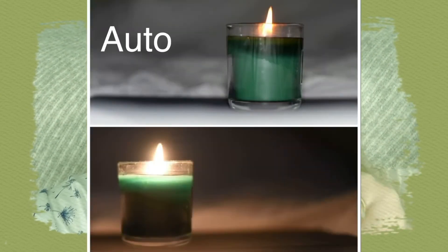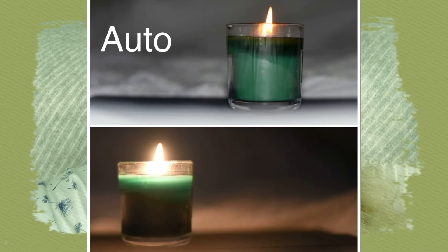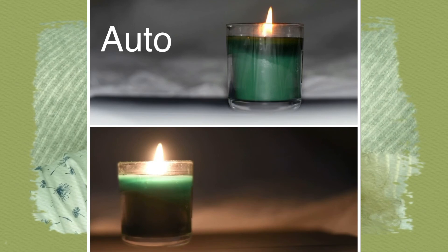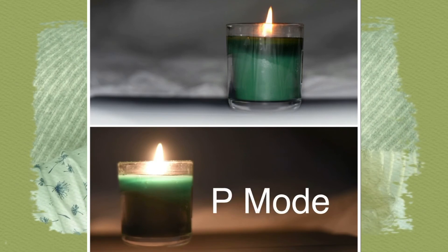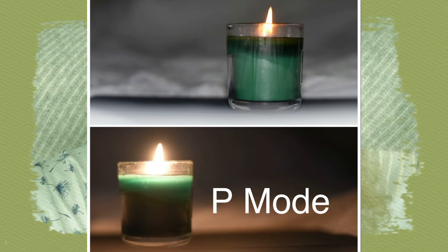Here are my final edits: the first is the shot of the candle in auto, and the second — which I hope you'll agree has a lot more ambience — was taken in P mode. That's the difference between automatic mode and P mode. P mode is a very underused setting but it's great, particularly if you want to just get out there and start shooting. I hope you found that useful and will give it a try.